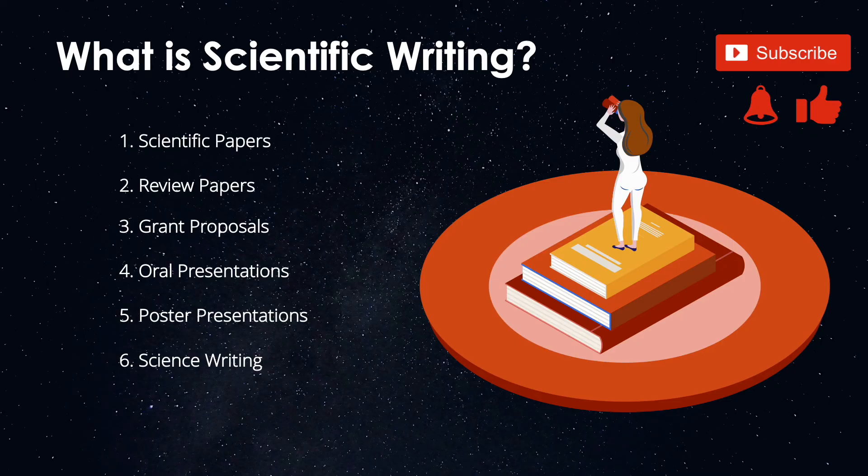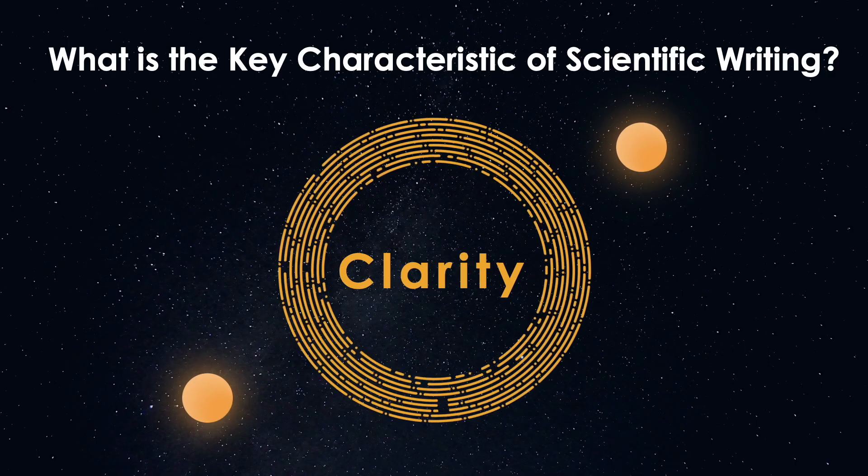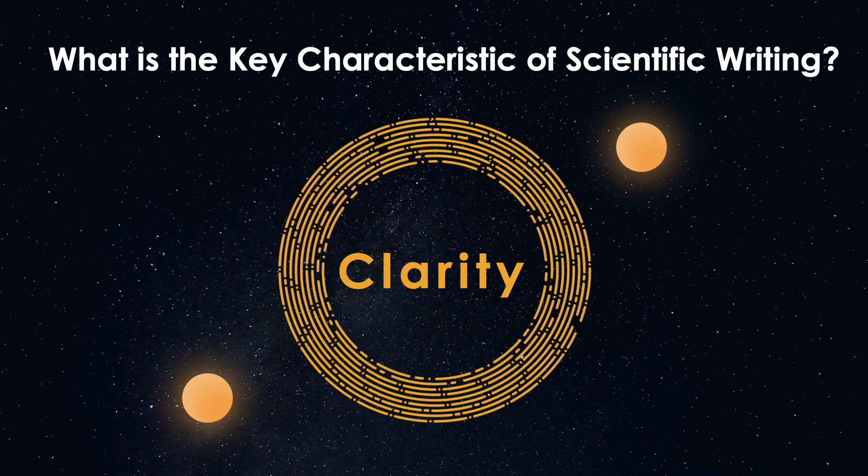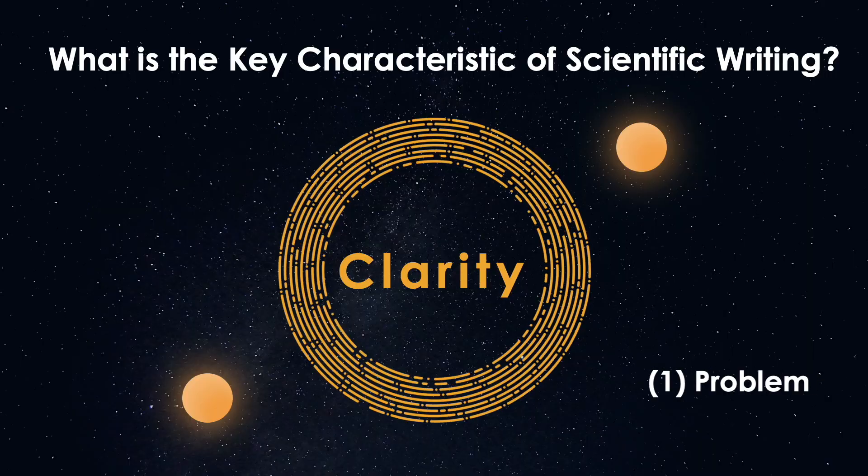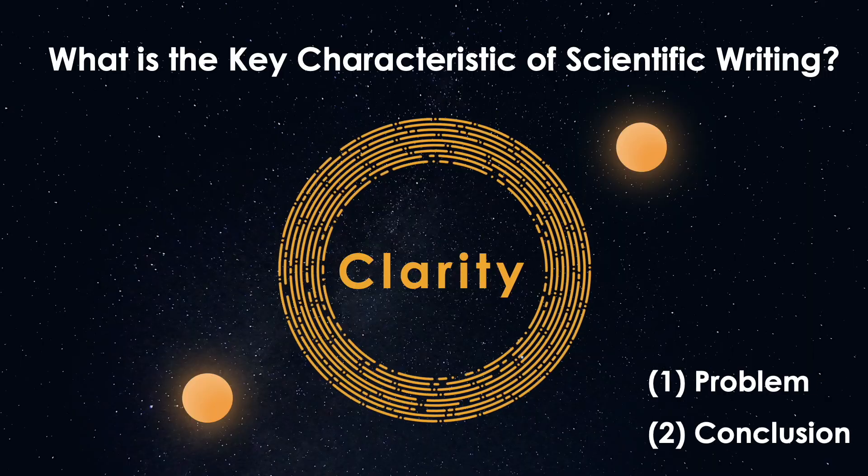We will look at each type of writing in detail a bit later, but first we need to identify the key characteristic that all these types of writing have. This key characteristic is clarity, which is effectively communicating ideas in the fewest words possible. The essence of scientific writing is clearly identifying the problem you are investigating and then clearly stating the conclusions of your study.